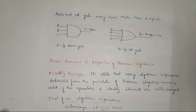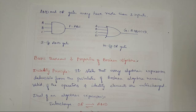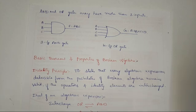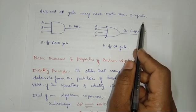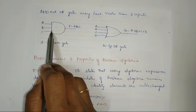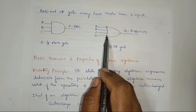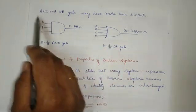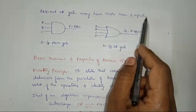The next topic is that AND gate and OR gates may have more than two inputs. In the previous video, I had given the logic gate diagram for the two input AND gate and two input OR gate.